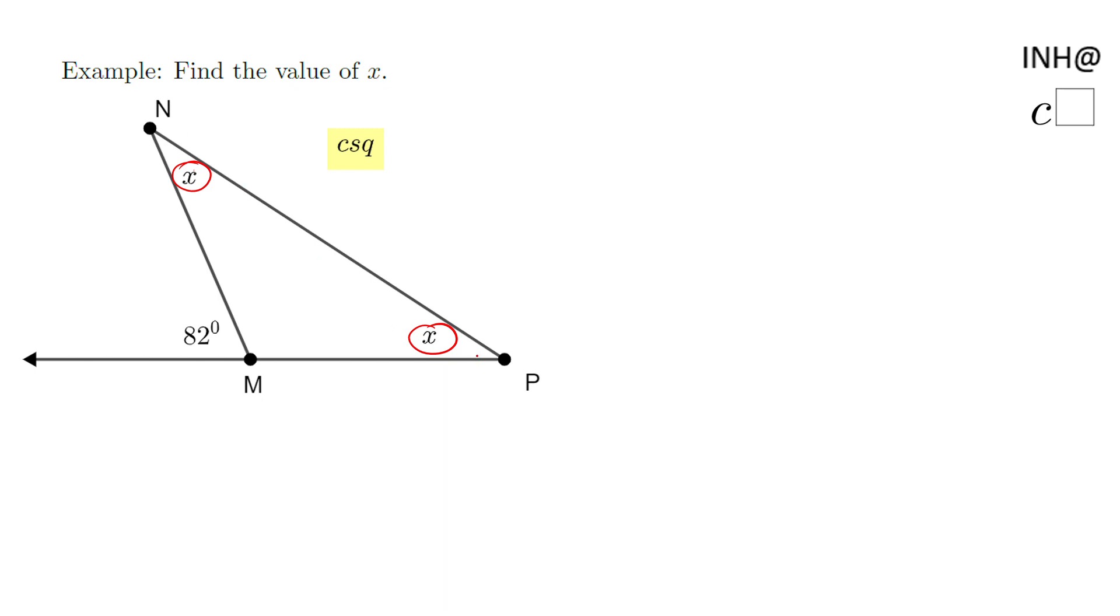Also we notice we have this angle here which is 82 degrees. This is what we call an exterior angle. Why? Because if you notice, it's outside of the triangle. It is formed by this line MP and the adjacent side to this side MP, so this is an exterior angle.